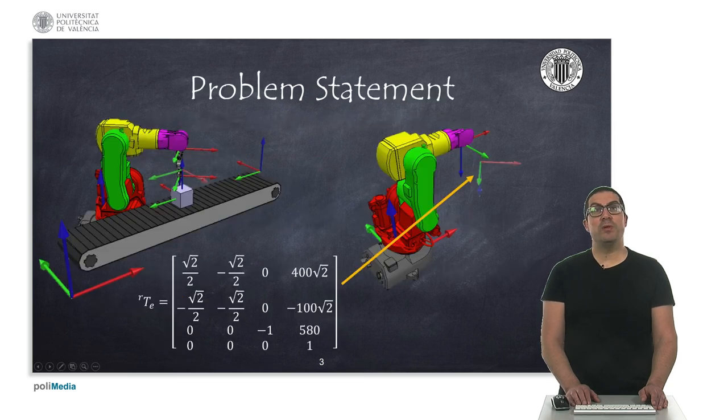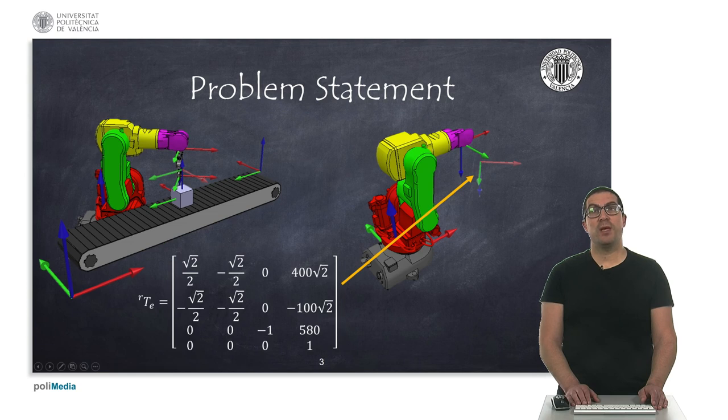The problem to be solved is to find out the positions of joints that make the end effector of the robot be positioned and oriented with respect to the robot base as indicated in a transformation matrix. This matrix corresponds to the position in which the robot gripper will be able to grip the object in its current position. I mean the numerical values of this matrix.